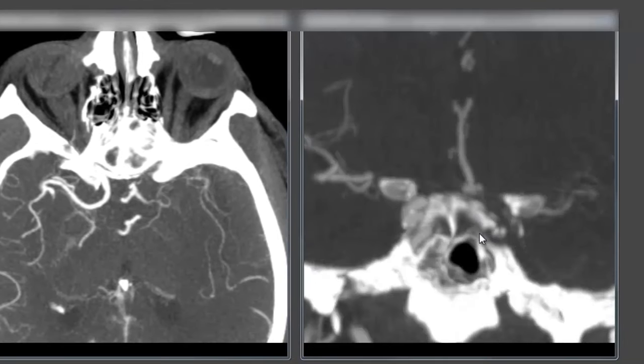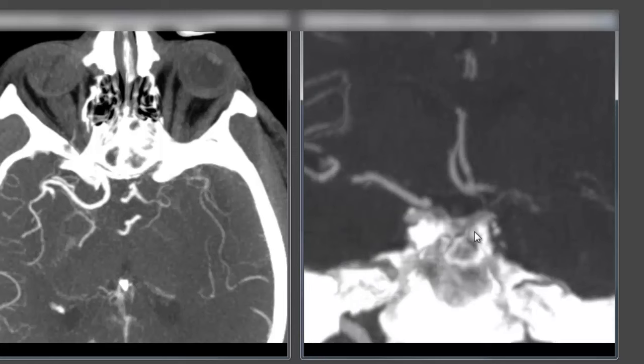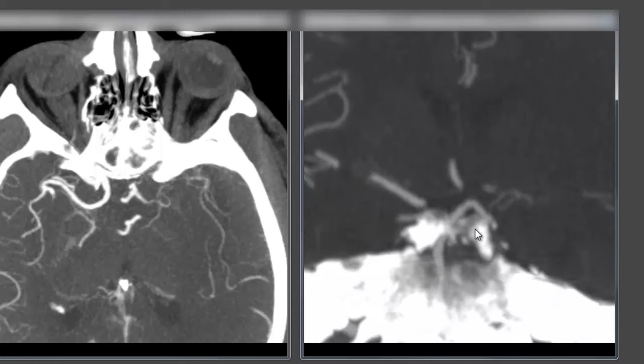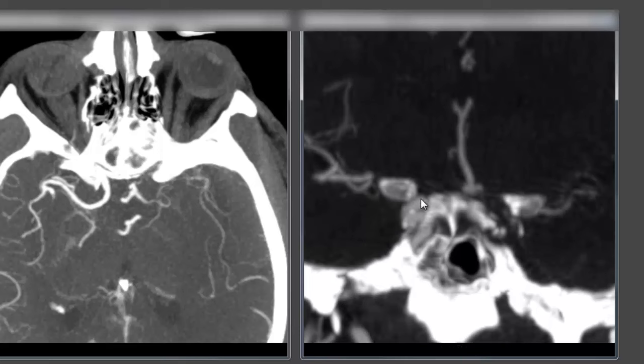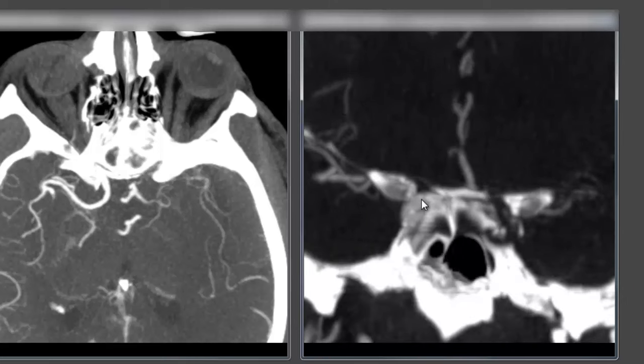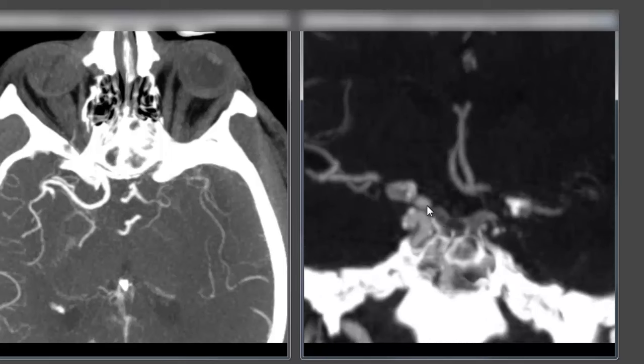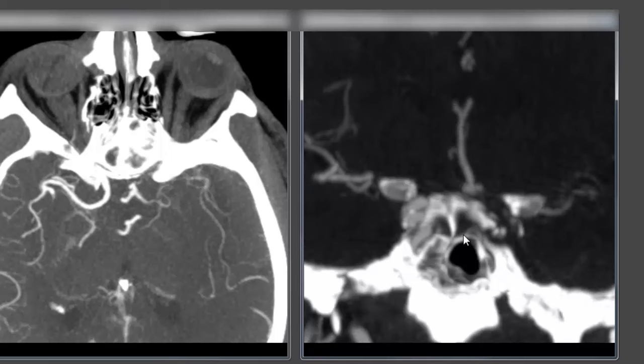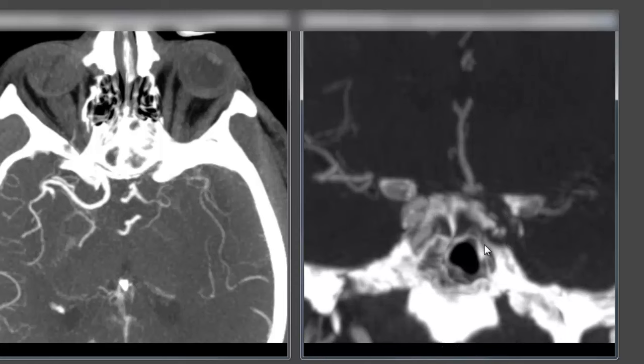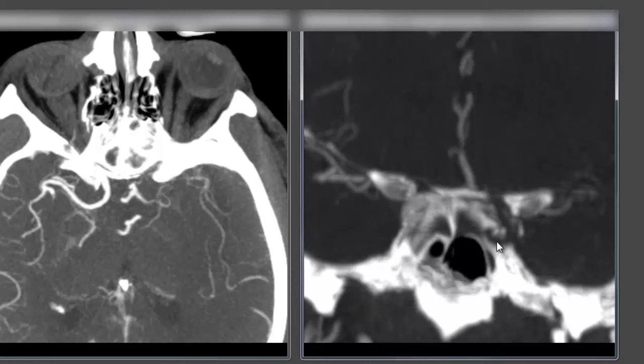Same picture on the coronal reconstructions. If we look down at the skull base we see the normal right internal carotid artery making its way through the skull base up to its terminus here and we do not see any contrast opacification, just an empty bony canal.